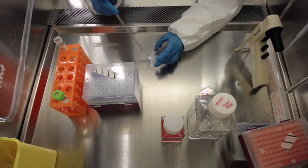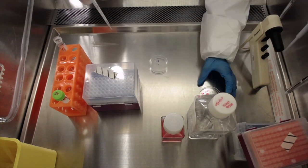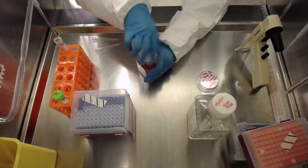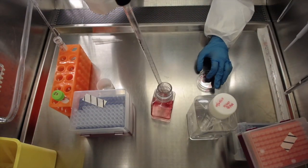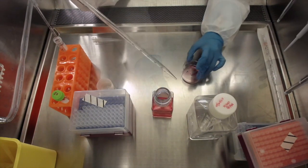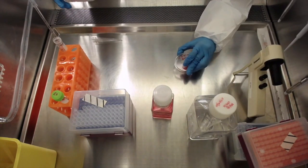Aspirate the DPBS and add 2 milliliters of Releaser. Swirl the dish to evenly distribute the Releaser and incubate cells with the reagent for 1 minute.